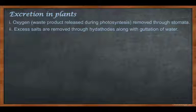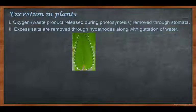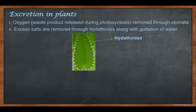A new word — hydathores. In the winter season, at the tip or margin of a leaf, some water droplets appear. At that tip or margin, some pores are present from where water is released — that pore is called a hydathore. The process of removal of water through hydathores is called guttation of water.